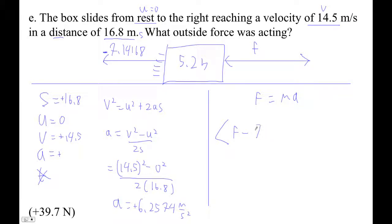F minus 7.14168 equals 5.2 times. Now we bring in our acceleration from here, positive 6.2574.